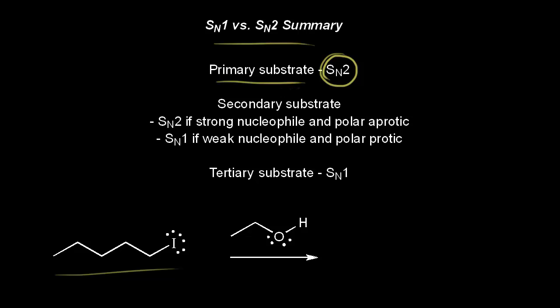From an earlier video, we know that an SN2 mechanism has our nucleophile attack at the same time that we get loss of a leaving group. For this reaction, our nucleophile must be our solvent, which is ethanol. So the oxygen is going to form a bond with this carbon, highlighted in red, at the same time we get loss of a leaving group. These electrons come off to form the iodide anion, which is an excellent leaving group.